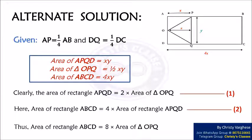Now let us consider an alternate solution for this problem. It is given that AP is equal to 1/4 of AB and DQ is equal to 1/4 of DC. From this, area of rectangle APQD is equal to length times breadth, that is X times Y.